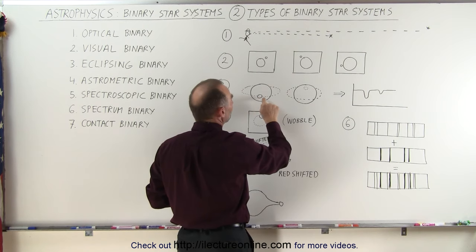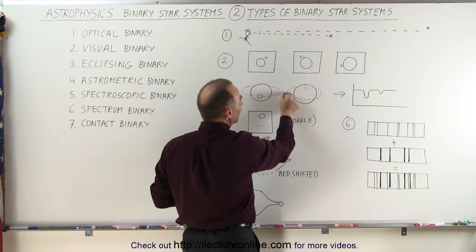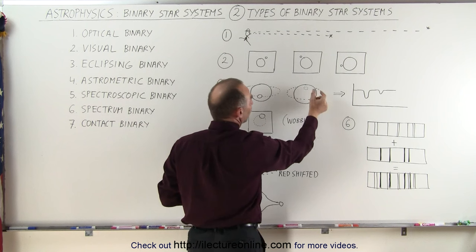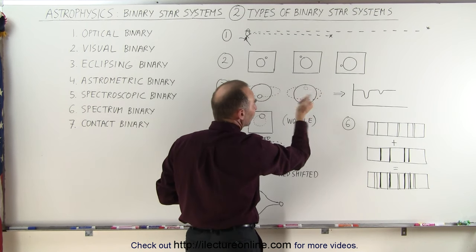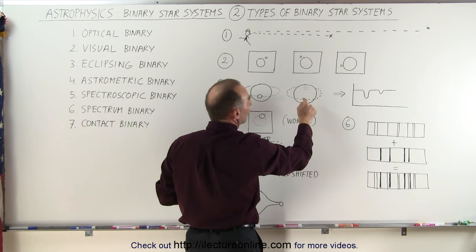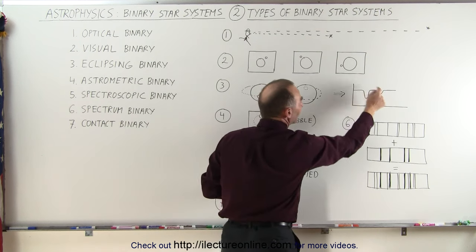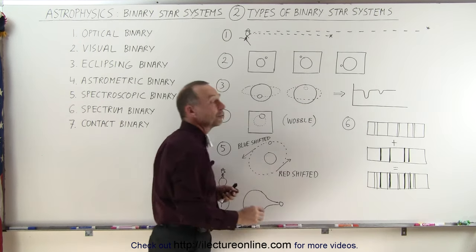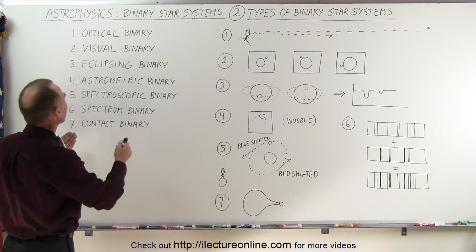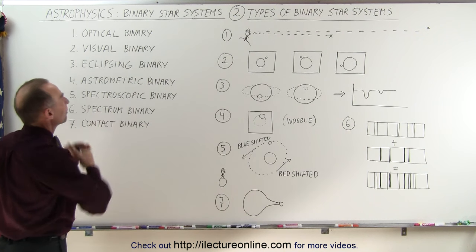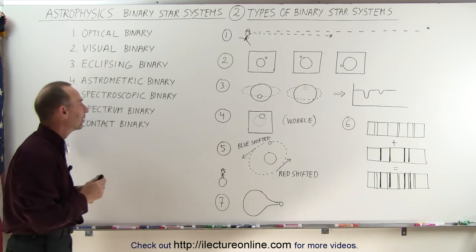Then when that small star moves behind the other star, instead of being next to it — when the star is next to it we receive the light of both stars — when the small star moves behind the big star we have a little bit of dimming because we no longer see the light of the smaller star. We call that an eclipsing binary because one star will eclipse the light of the other.